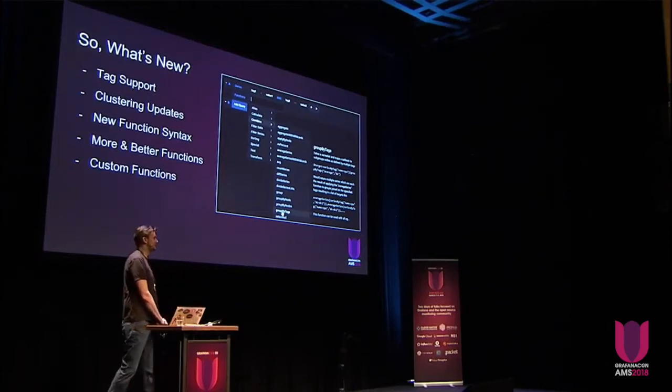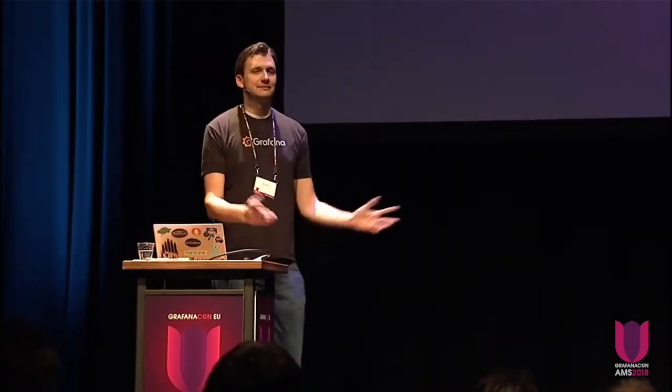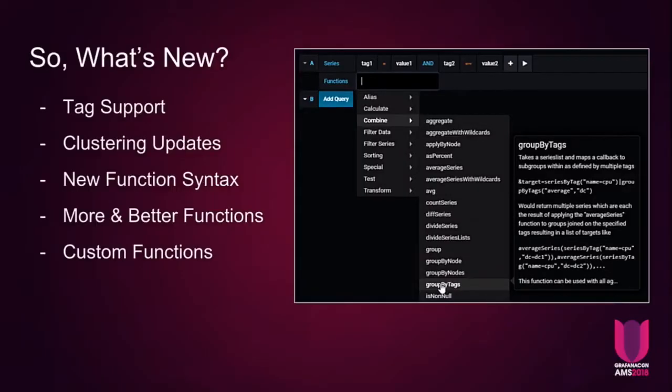So, what's new? What isn't? The big headline feature that everyone had been waiting for and clamouring for in Graphite was tag support. We had a lot of discussion about that at the last GrafinaCon and at Monitorama last year and came up with a plan to implement tag support in Graphite in a way that would play nicely with the existing ecosystem. The other big stuff we worked on was another round of clustering updates.